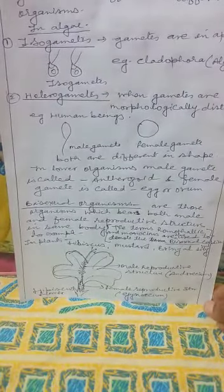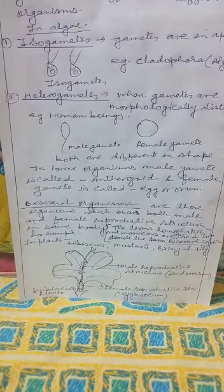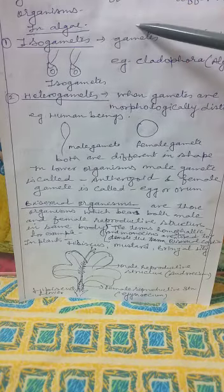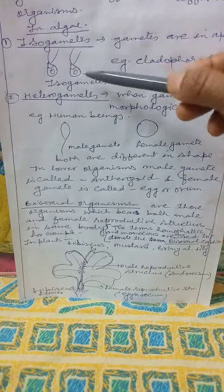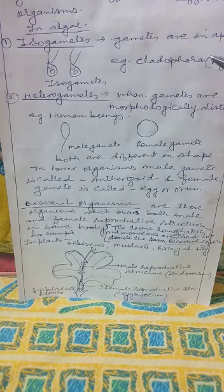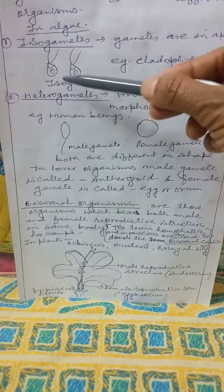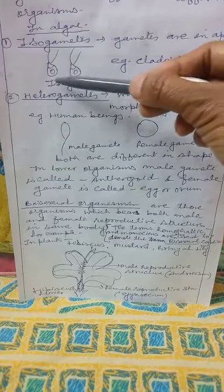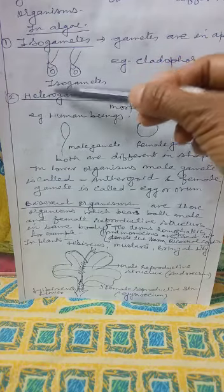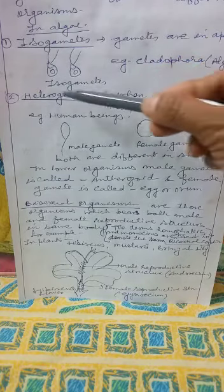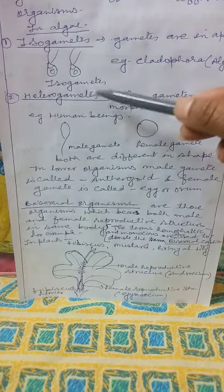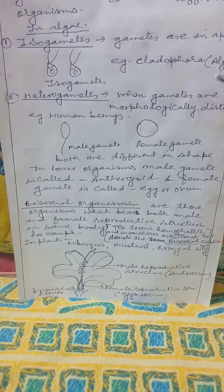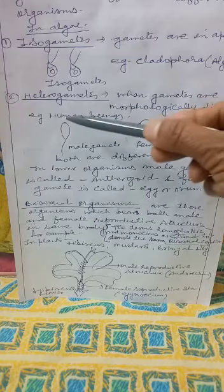Gametes are different in organisms. If we take the example of algae, which is a lower organism, gametes are similar in shape and size. As shown in the diagram, gametes of algae are similar in shape and size, and that is why they are called isogametes. An example given is Cladophora, which is a kind of algae.